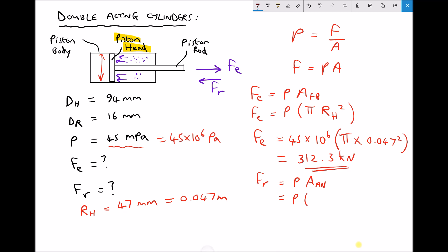Pressure times—well we already said that the area of the annulus was the full bore area minus the area of the piston rod. We have the full bore area minus the area of the piston rod. Before we calculate that, we need to know the radius of our piston rod. The radius of the rod equals half the diameter of the rod, so 8 mm. If we divide that by 1000, we get 0.008 m.